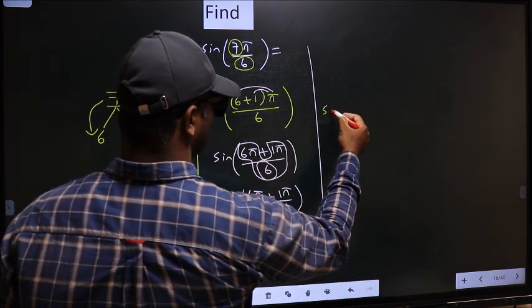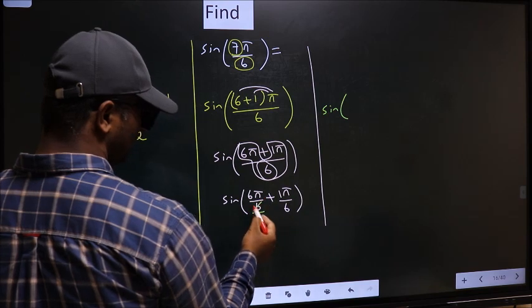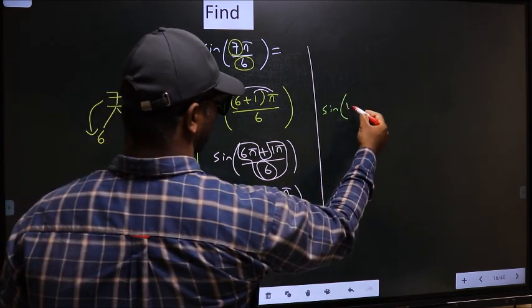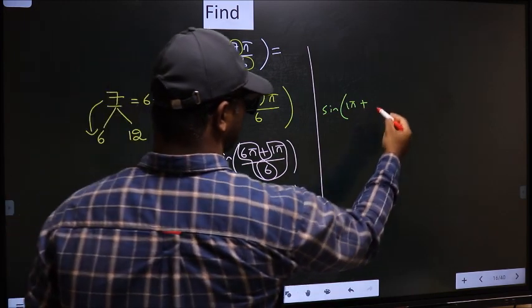Next, sine of 6π/6, you cancel 6, you get 1π plus this angle as it is you write.